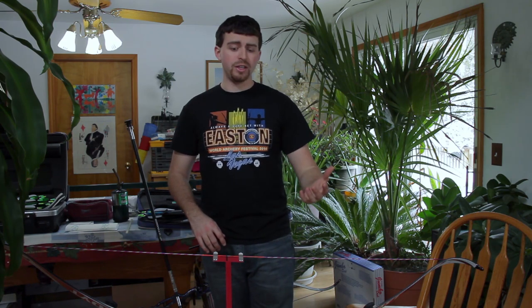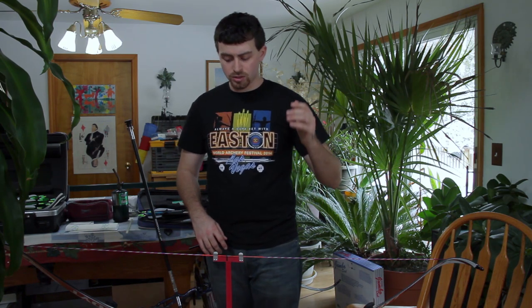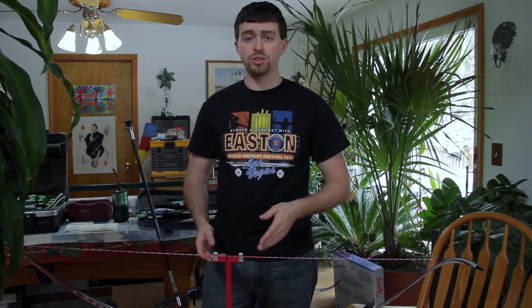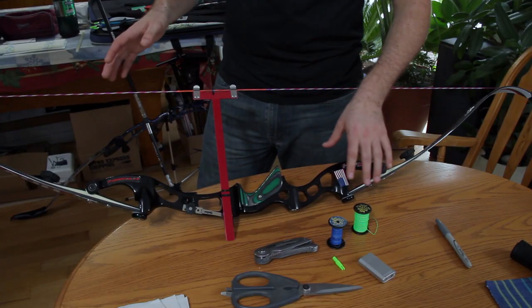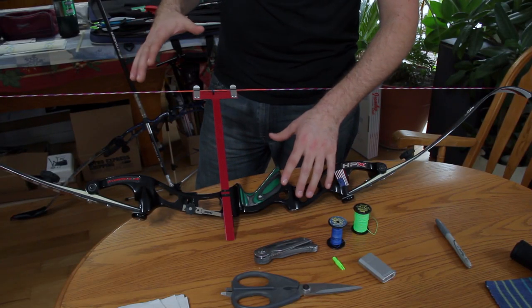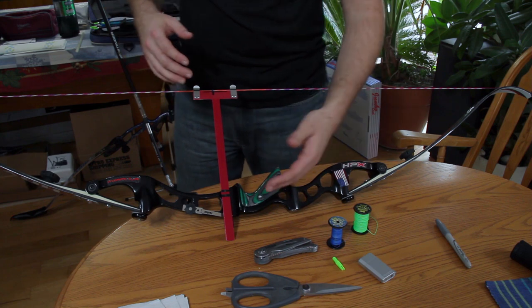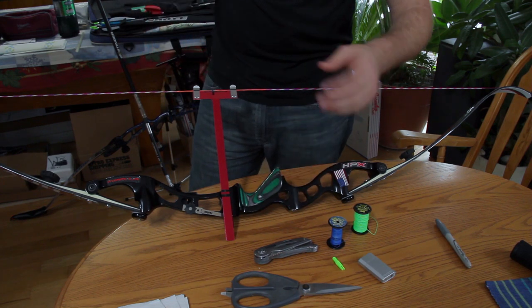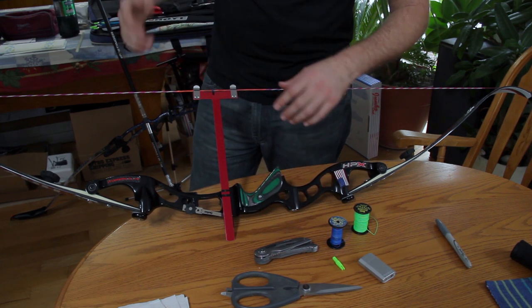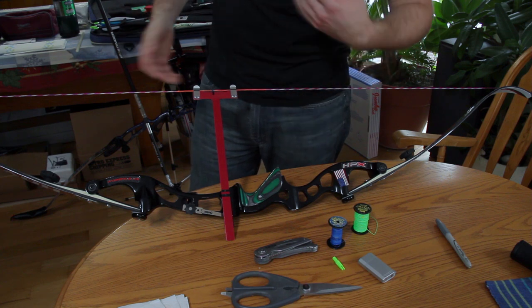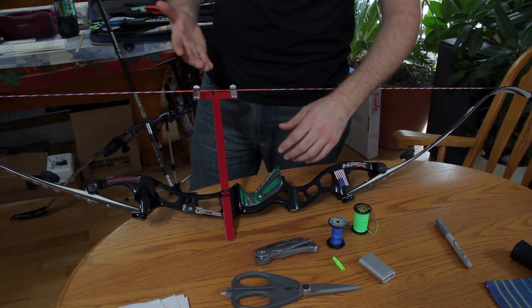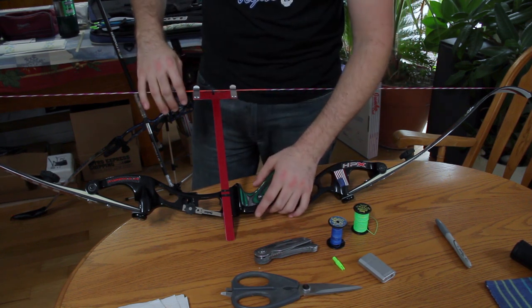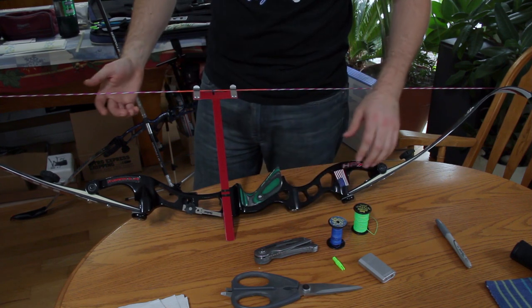Alright now that you know what you need, we're going to go and put a knocking point on this string. Alright so now we have the bow set up so it's easy for you guys to see. Normally you would want a stabilizer on this bow so that you can have it propped up so that you can do it yourself. But to show you guys the best way to put a knocking point on the bow, I have it set up this way.